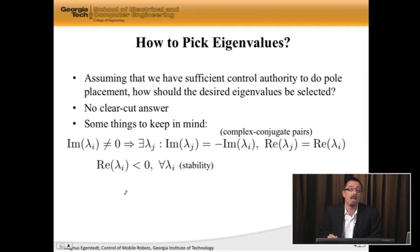We have to assign two if that's the case. The other thing is we need the real part of the eigenvalues to be strictly negative, because otherwise we don't have asymptotic stability. If we keep an imaginary part around, we get oscillations.